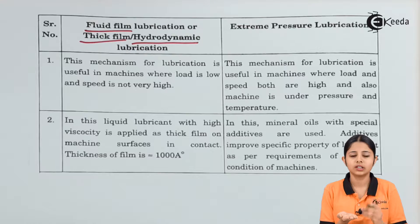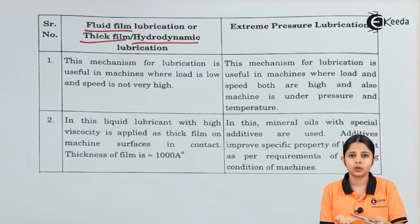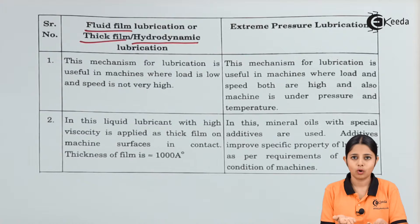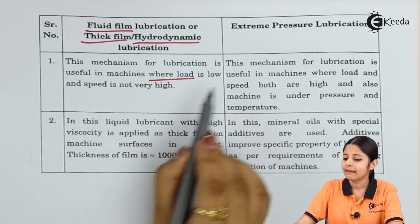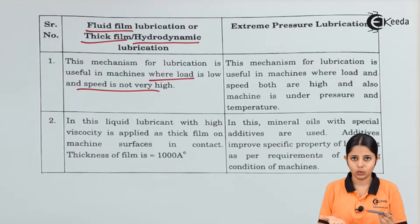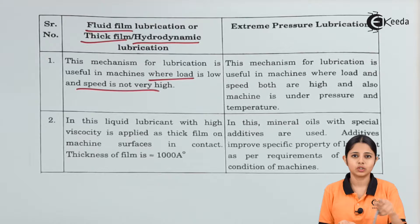The lubricant used can be grease or oil, and it is generally semi-solid in nature so it forms a film on the surface. Because of this film, the moving part does not touch the other part at all — it only contacts the lubricating oil. The lubricant should not be too liquidy, otherwise it may spill off and disrupt the entire machine. This mechanism is useful for machines where the load is low and the speed is also not very high, because at very high speed the lubricants will start spilling off and cause damage.